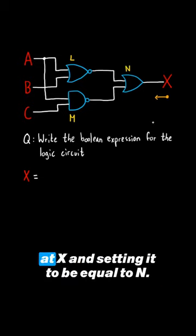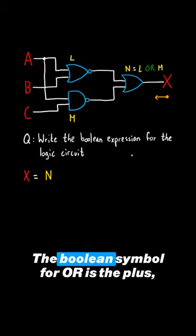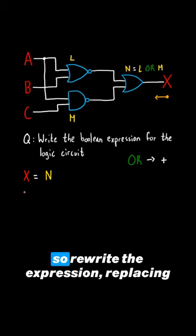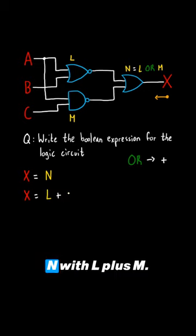Then we'll work backwards, starting at X and setting it to be equal to N. N is an OR gate between L and M. The boolean symbol for OR is the plus, so rewrite the expression replacing N with L plus M.